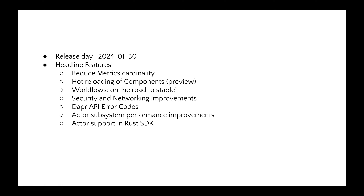One thing is reducing metrics cardinality. The issue was that the metrics DaprD exposed had a large amount of cardinality — concretely, Prometheus metrics with lots of labels, which don't handle very well in a time series database and explodes things quite a lot. So we reduced the cardinality, and you should see some performance improvements in your metrics. Hot reloading of components — a highly requested feature — is finally coming in 1.13 and is merged into master. This means you do not need to restart your DaprD to load new updates to your existing components, or you can delete components and create new ones, both in self-hosted and Kubernetes mode. This will be a preview feature, so you'll need to opt in.